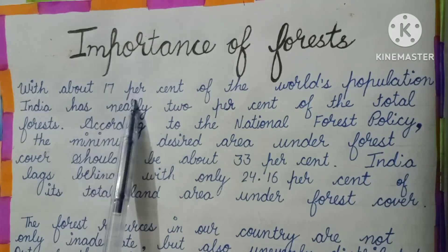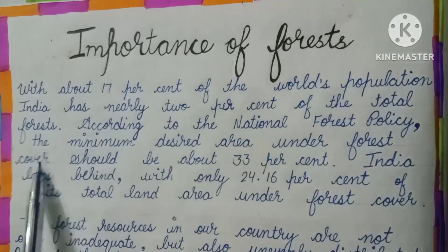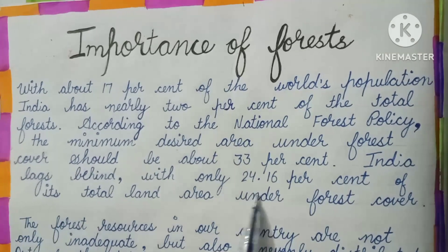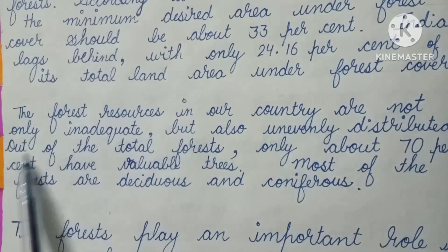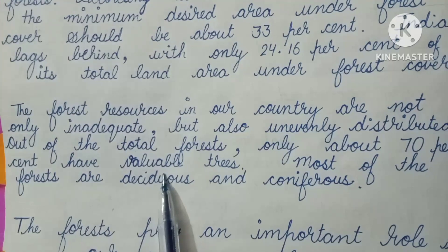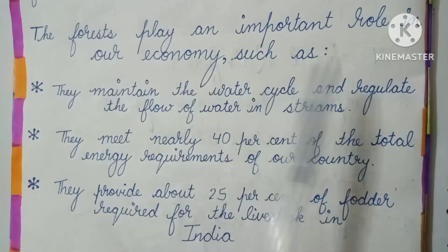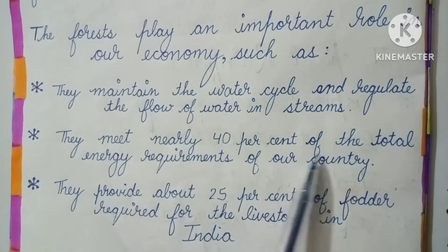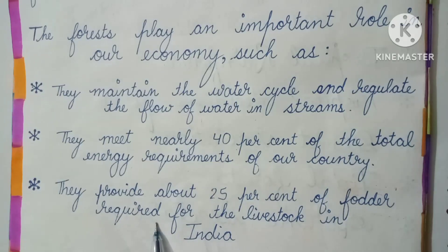Now, the importance of forests. With about 17% of the world's population, India has nearly 2% of the total forests. According to the National Forest Policy, the minimum desired area under forest cover should be about 33%. India lags behind, with only 24.16% of its total land area under forest cover. The forest resources are not only inadequate but also unevenly distributed. Out of the total forests, only about 70% have valuable trees, and most forests are deciduous and coniferous. Forests maintain the water cycle, regulate stream flow, meet nearly 40% of the total energy requirements, and provide about 25% of the food required for livestock in India.